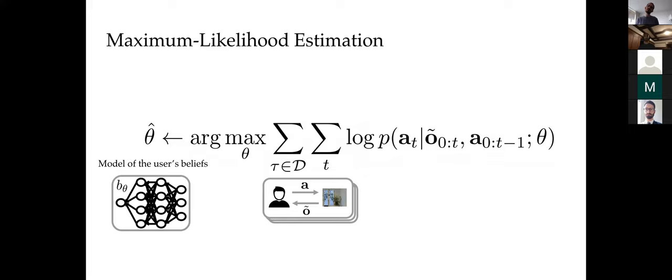We found that this fairly straightforward approach worked well empirically. In synthetic experiments, we were able to recover ground truth internal user model parameters. Even with real users, we recovered a model that was good enough to actually provide good assistance later on.